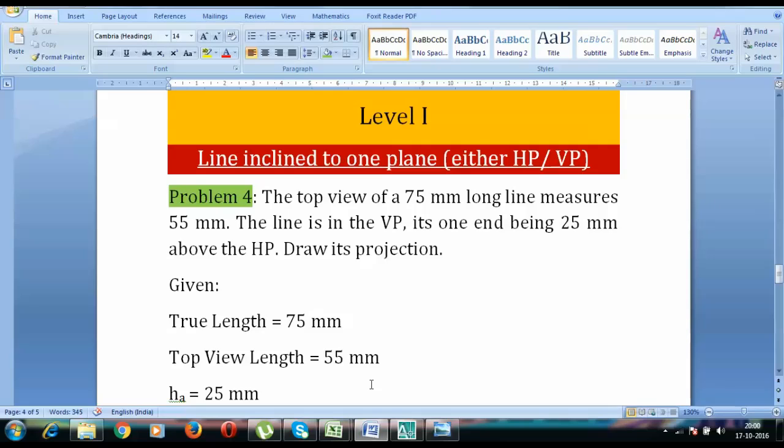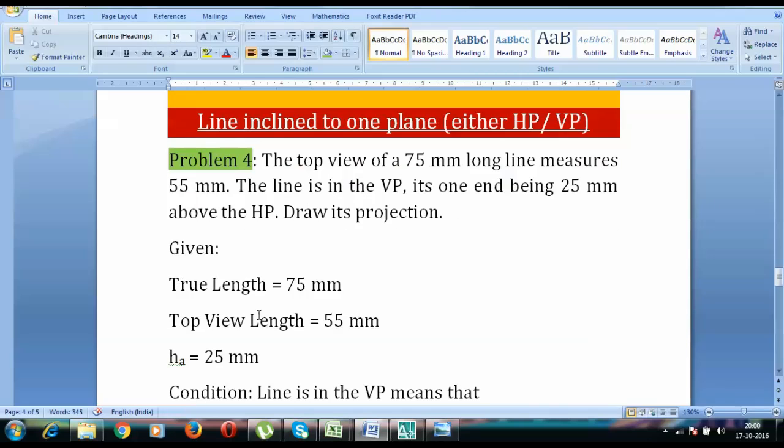One end is 25mm above the HP. Draw its projections. So the true length of the line has been given as 75 millimeters, and when you look at this line from the top it appears as a line of 55 millimeters. That's why I've written top view length. It's been kept in such a manner that it appears as 55 millimeters when you look at it from the top.